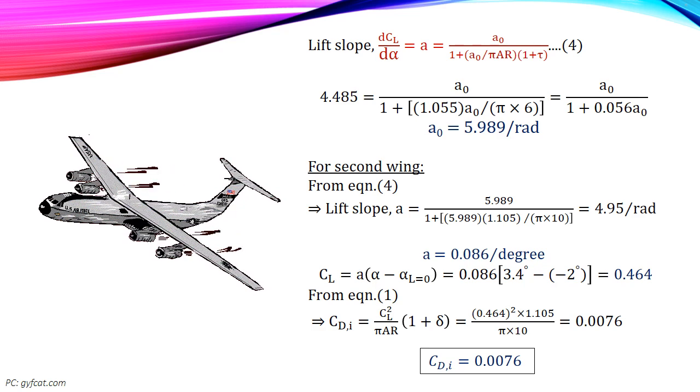Since the second wing has the same airfoil section, then a0 is the same. Then solve equation number 4 for aspect ratio 10. The wing airfoil slope is 0.086 per degree.